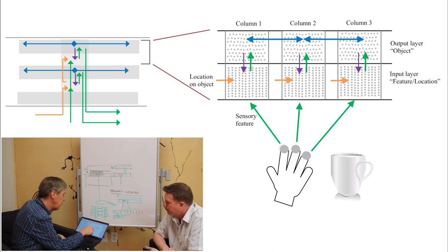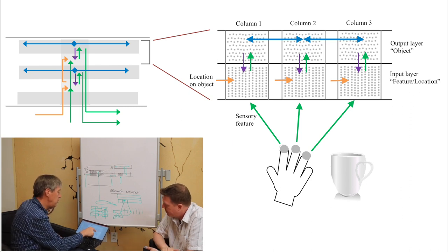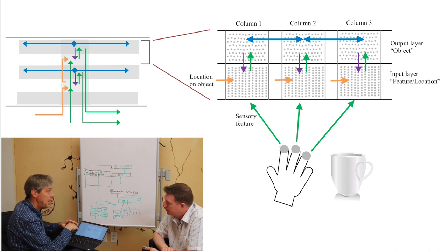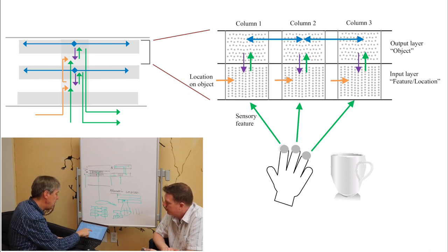So in this picture here, we show three columns: column one, column two, column three. The input layer in each of these columns is equivalent to the spatial pooler that we have today. It's the mini columns, exact same mechanism. But the difference now is we have this orange input called location on object.